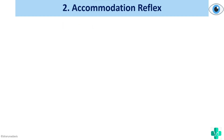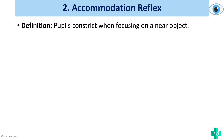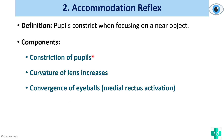Now we will see about the accommodation reflex. When we change our focus from a far object to a near object, there are three changes in our eyes: pupillary constriction, lens thickening, and convergence of the eyeballs. These three changes — pupillary constriction, increased curvature of the lens, and convergence of the eyeballs — are called the three C's of accommodation reflex.